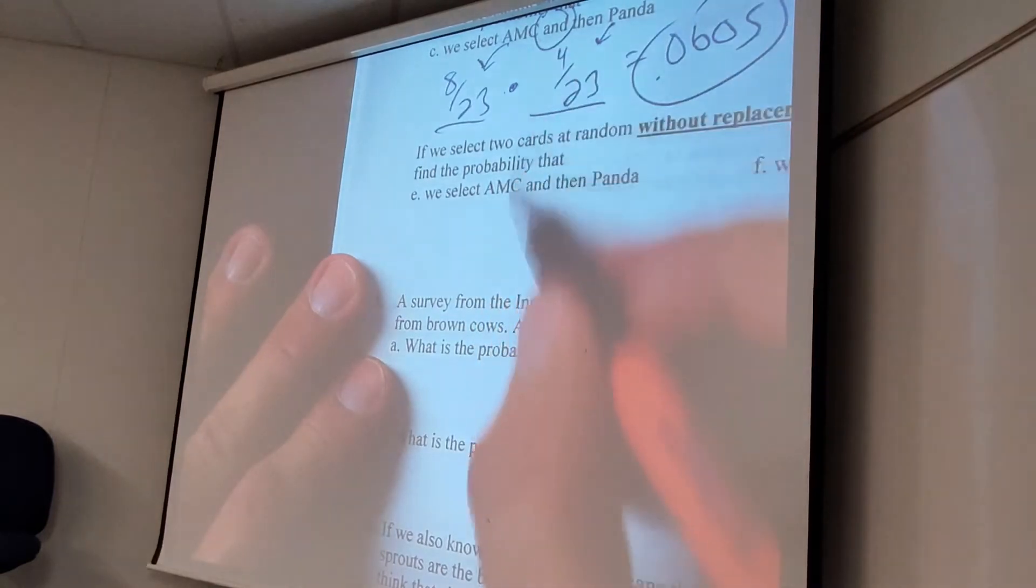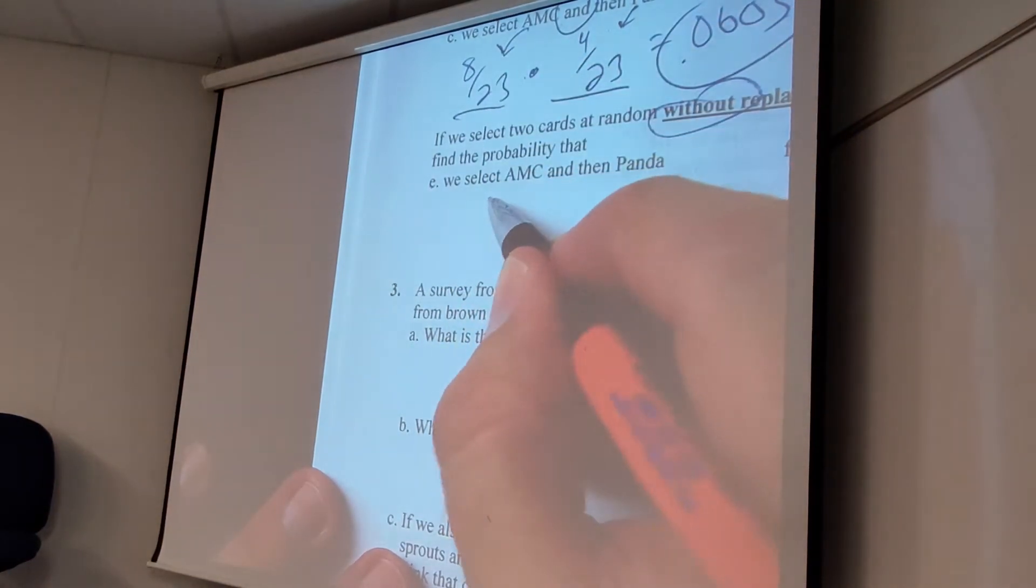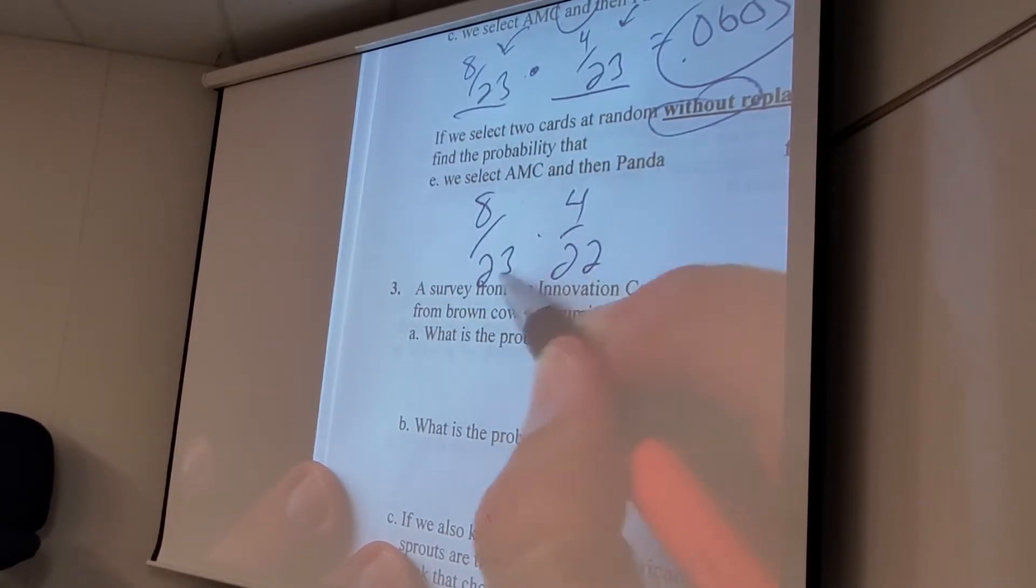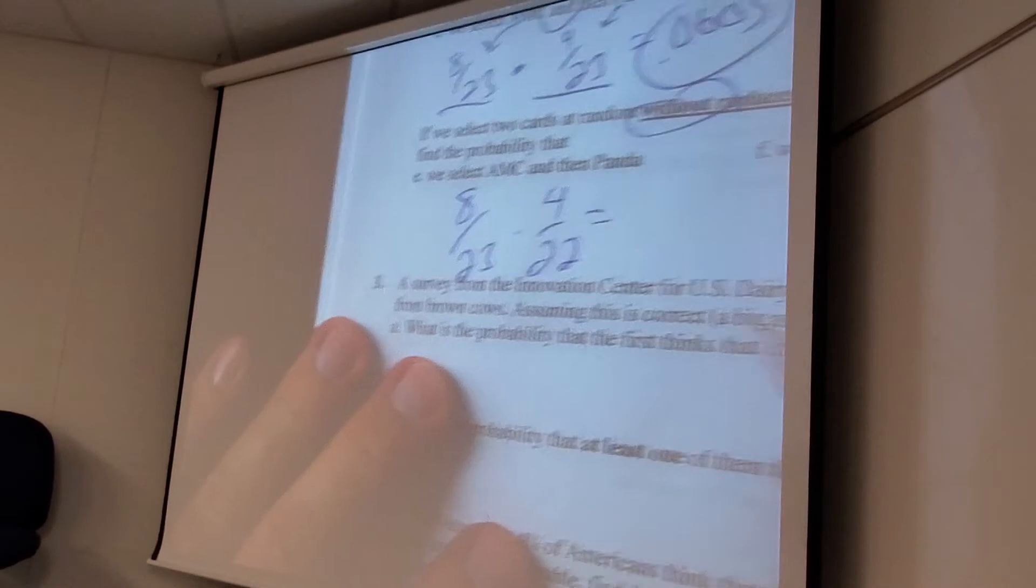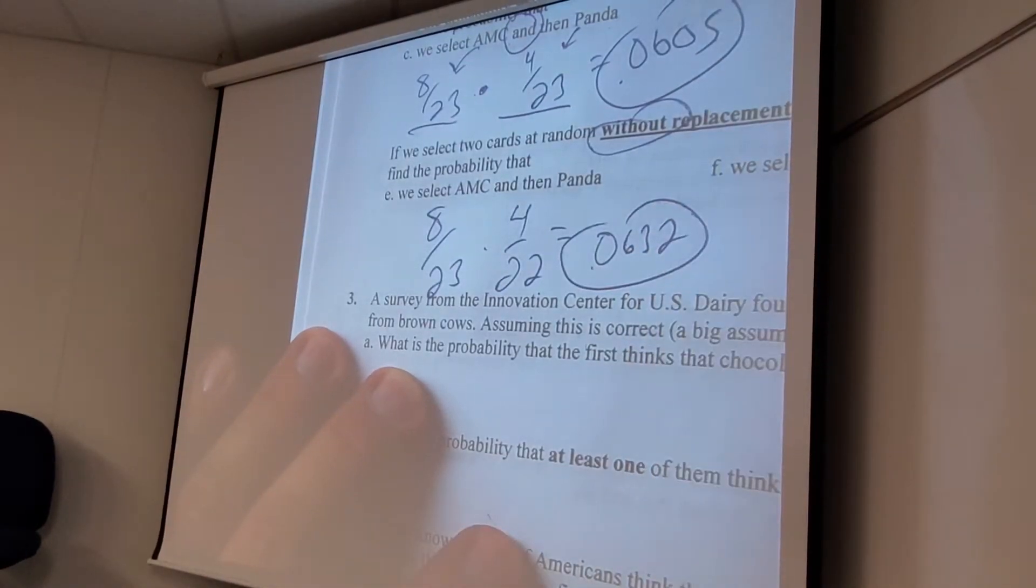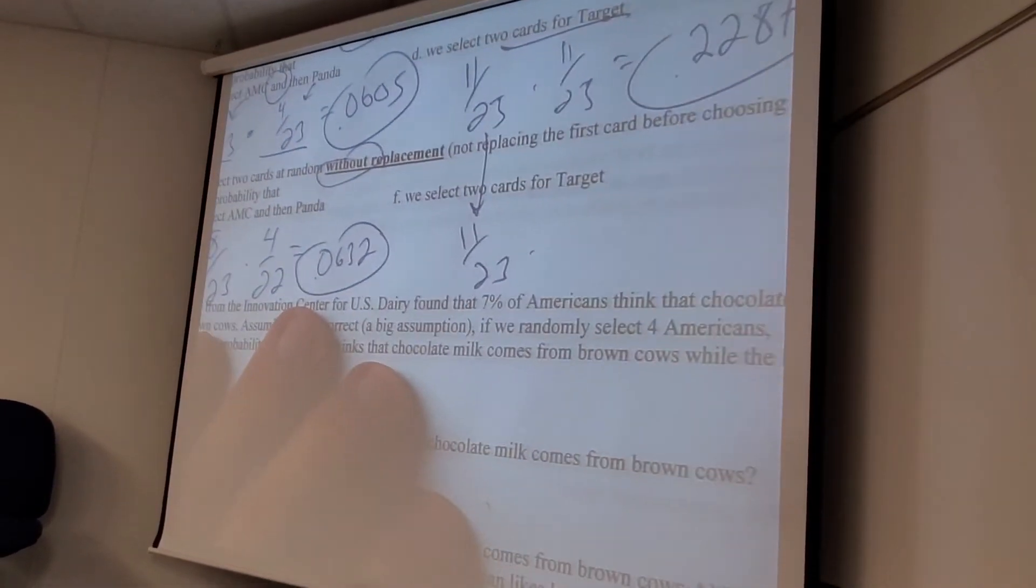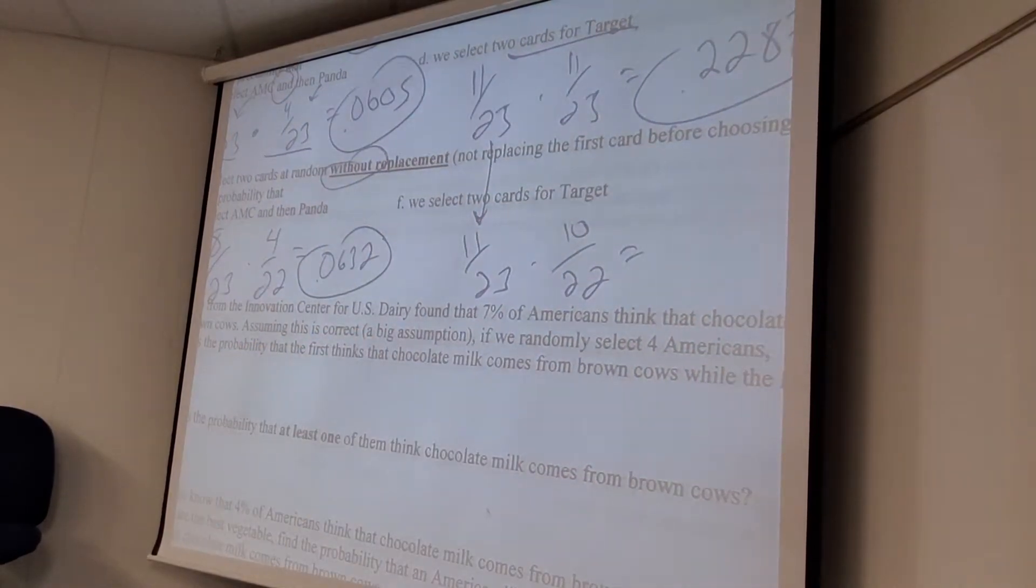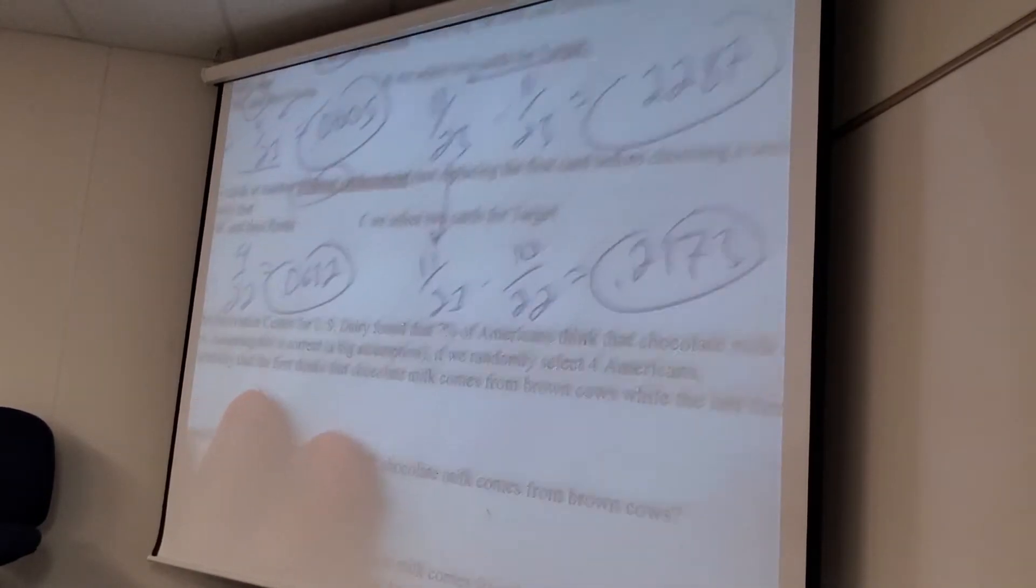All right. Notice how I like to do this. I asked the exact same question, but now I'm doing it without replacement. So, the first card, nothing's changed. It's still 8 out of 23. What's true now for the panda card? 4 out of 22. I didn't lose any panda cards, but I did lose a card. And then, of course, whatever the hell that is. 0632. Two cards for target. 11 out of 23 times. What happens on the next go-round? Yeah. One less target card. One less card. 2, 1, 7. 7, 3. Okay. Funkadelic.